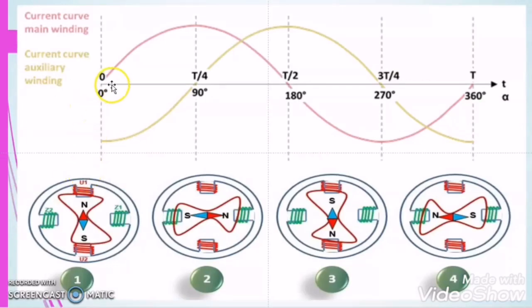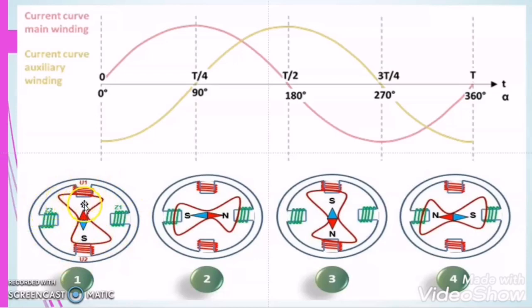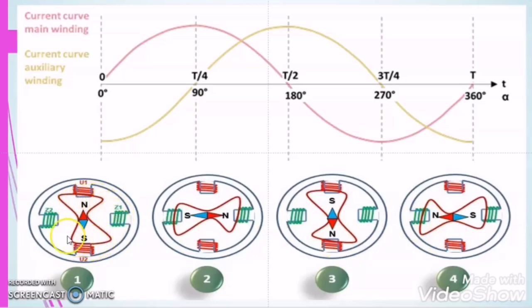Now we have satisfied both conditions: two phases with a phase displacement of 90 degrees, and two windings in the stator with a space displacement of 90 degrees. So the rotating magnetic field will develop again. As you can observe, with the change of the waveforms of the main winding and auxiliary winding, the north and south poles in the stator change position — the north pole rotates from one position to the next, creating a rotating magnetic field that cuts the rotor and causes it to start rotating.